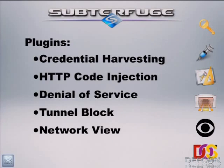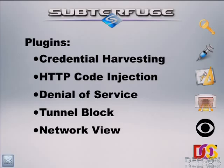Here are some of the plug-ins we'll briefly talk about, with three demonstrations. The credential harvester is the main module in Subterfuge. It uses all the backend tools — the ARP poisoning tool, SSL strip — puts them together in one spot, configures everything without requiring any text file editing, and just works. You click start and it starts intercepting any kind of web login traffic.